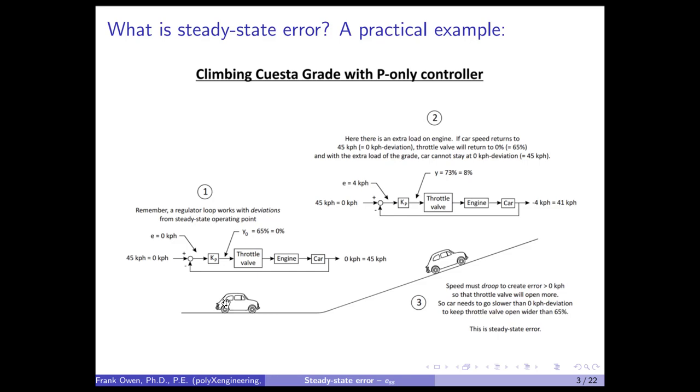45 kilometers per hour on the flat has a throttle opening of 65%. But when I start going up the grade, at 45 kilometers per hour I have the air resistance and rolling resistance, which haven't changed substantially. But the other thing I have going on is that I'm actually investing in gravitational potential energy, adding that to the car. The higher the car goes up, the more gravitational potential energy I've stored in the car. I'm going to have to have more fuel, more energy going into the engine, and a greater push on the ground to keep myself going at 45 kilometers per hour.